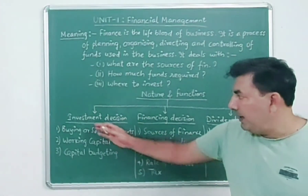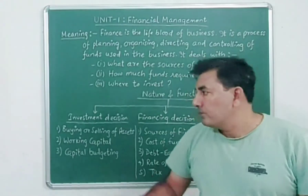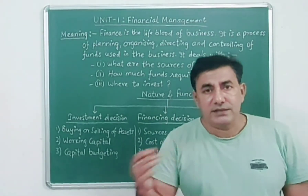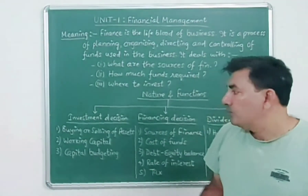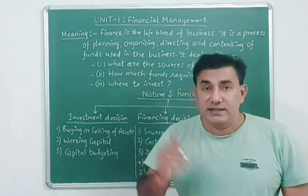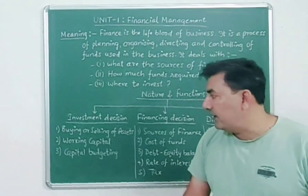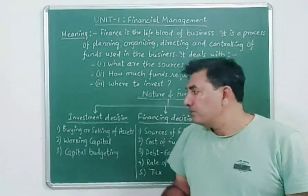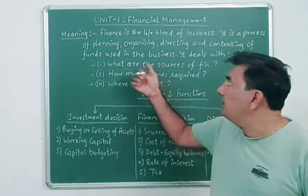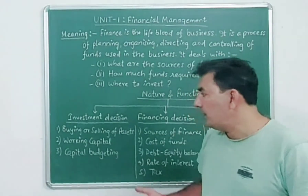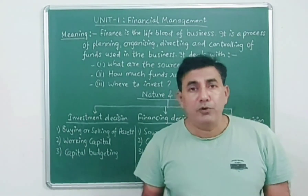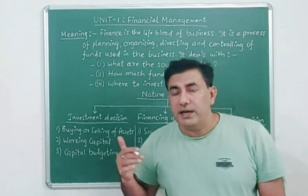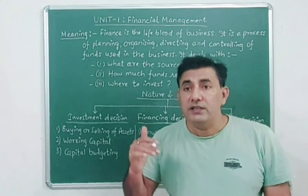In investment decisions, as the name implies, we decide where to invest. The first point is buying and selling of assets — fixed assets, current assets, fictitious assets. How much assets do we buy and how much do we sell? Working capital covers day-to-day expenses, and the requirement of working capital is another important function. The third is capital budgeting — how much capital is to be invested in the business or in new ventures.